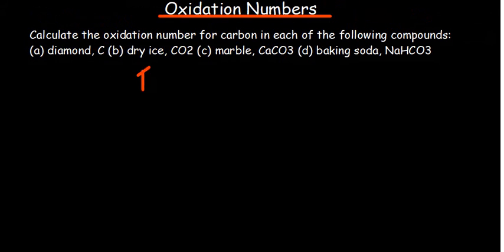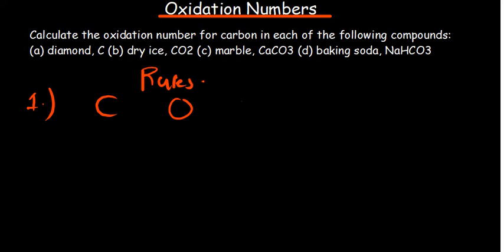We've got certain rules to consider when assigning oxidation states or oxidation numbers. Number one: the oxidation number of a free or neutral element is always zero. So when you're given any element from the periodic table without any sign — carbon, oxygen, magnesium — written in their elementary form with no charge assigned, the oxidation number is zero.